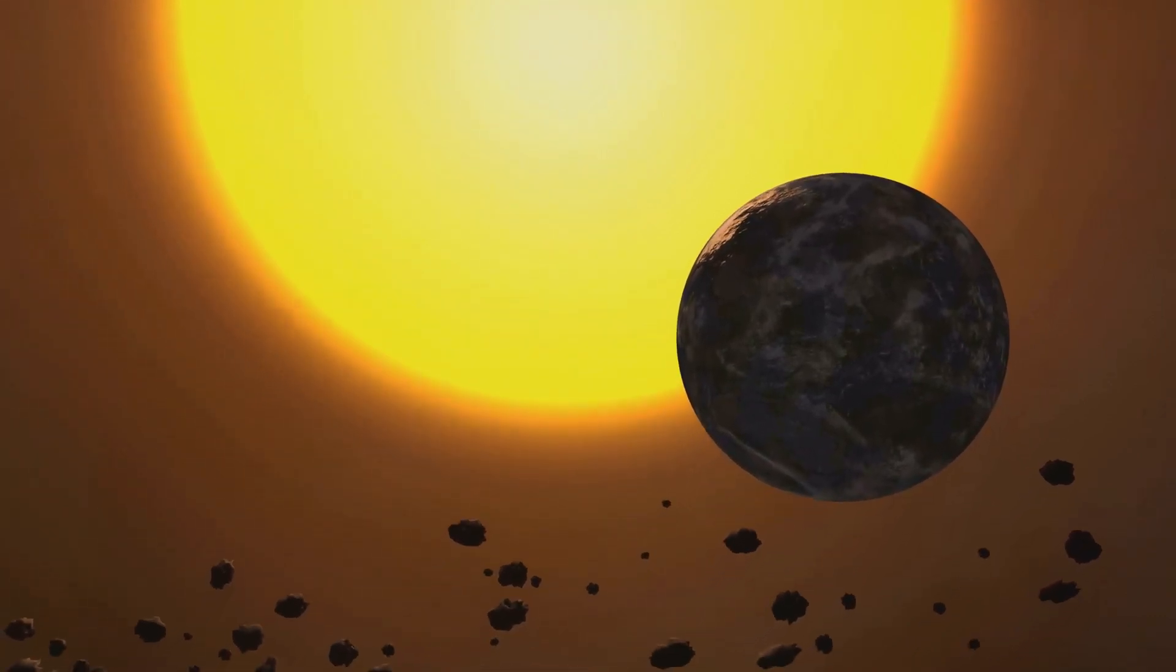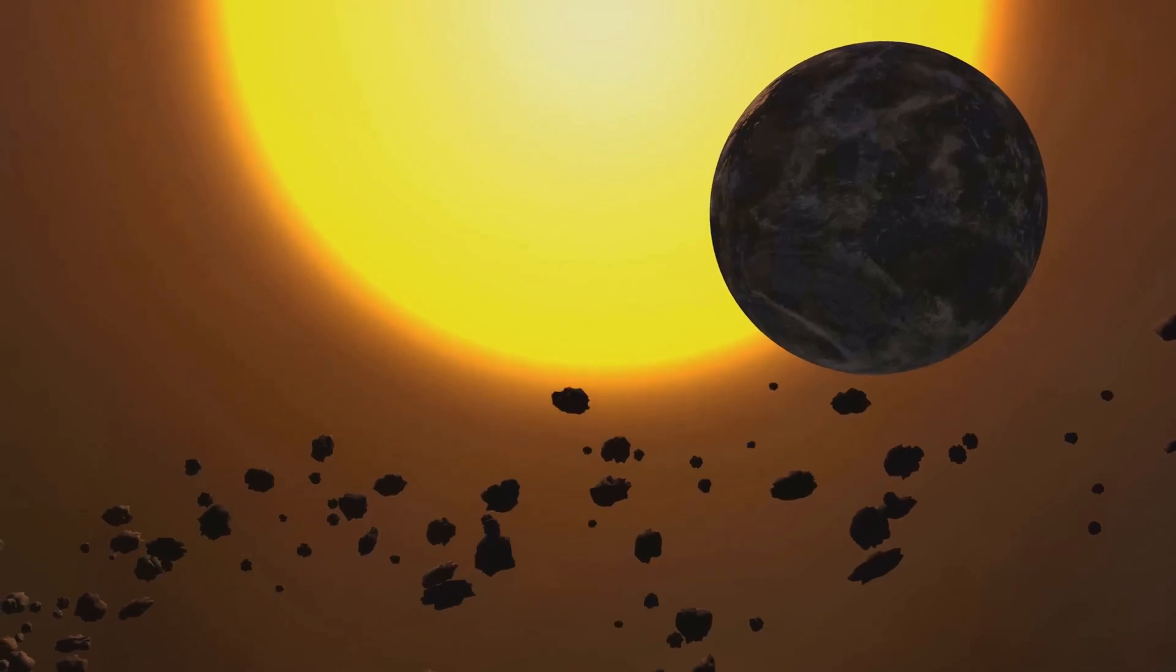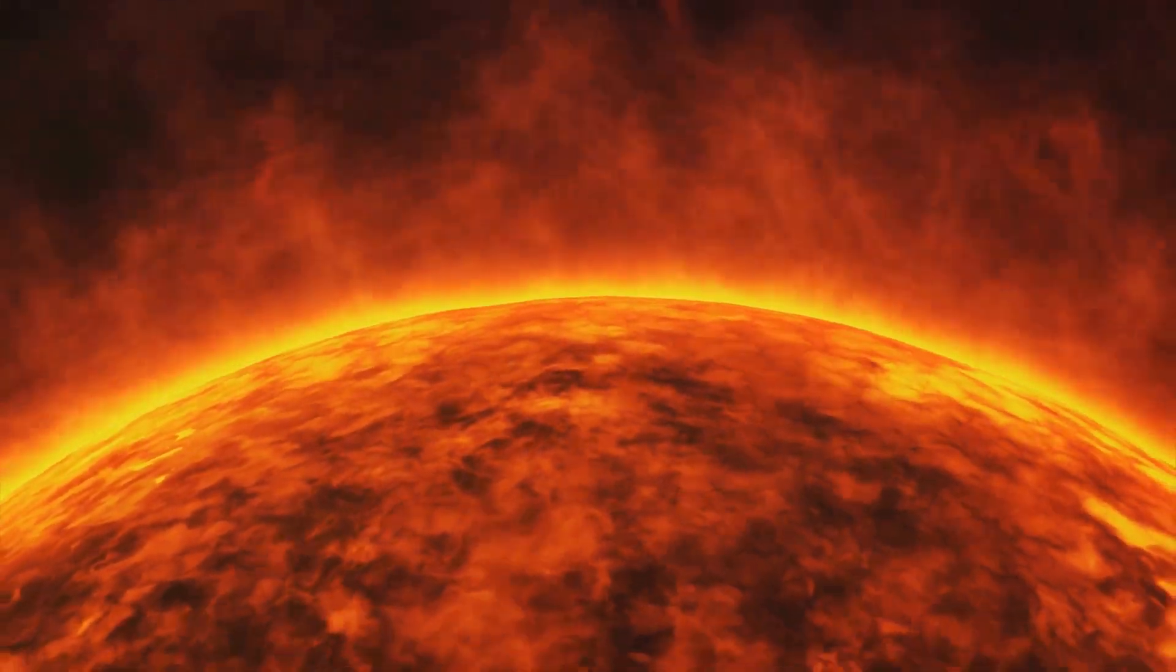Binary star systems, where two stars orbit around a common center of mass, are quite common in our galaxy. However, the likelihood of our solar system having two suns is considered quite low by the scientific community.